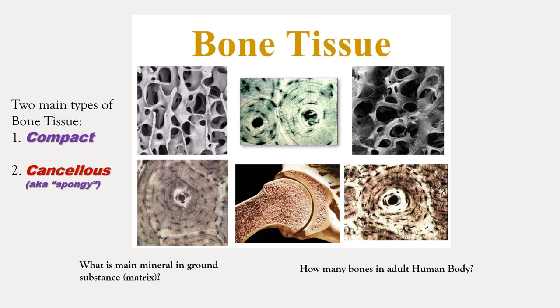Cancellous bone, especially in the long bones, harbors marrow. The next question: what is the main mineral in the ground substance of bone? Each one of these little black things is basically a cell. There's a big opening here — that's a central canal — and there are other openings we'll discuss later. Ground substance is just another way to say extracellular matrix; it's an older term.